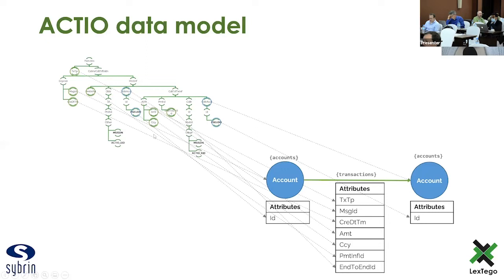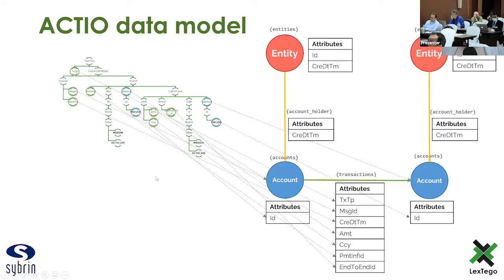When we extended the model with the Actio entity identifier, this is the disambiguated entity identifier. So if you have a number of different account holders, device, or MSISDN holders identified across the network, we would run them through the entity resolution routine and assign a unique Actio EID to all of the entities that share enough common attributes to be considered the same entity. We then also extended our data model so that we could now do evaluations at the entity level and not only at the account level.